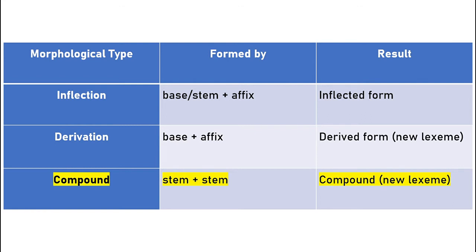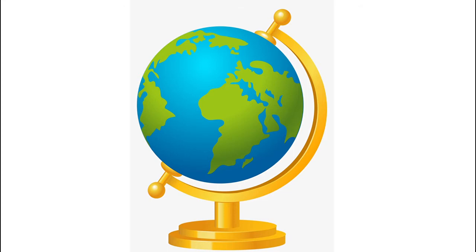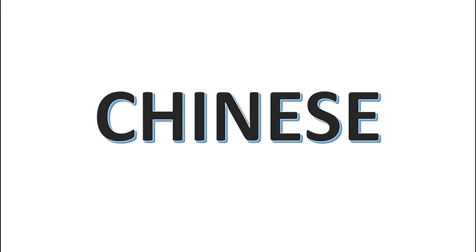Simply put, compound morphology is just sticking two words together to make a new one, which is easy enough to do. That is likely why compounding is the oldest and most ubiquitous source of new word formation across all the world's languages. In fact, every natural language — that is, languages that form naturally — contains examples of compounding, some more, some less. For example, roughly 70-80% of all Chinese words are compounds.